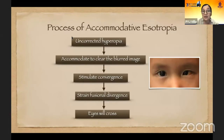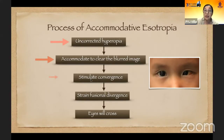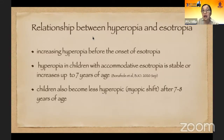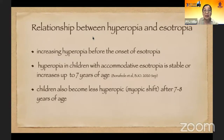In the process of accommodative isotropia, when the hyperopia is uncorrected, the eyes tend to accommodate excessively just to make the image clearer. This will stimulate overconvergence, straining the fusional divergence, which eventually leads to crossing of the eye. The relationship between hyperopia and isotropia is as follows: there is increasing hyperopia before the onset of isotropia. The grade in hyperopic children with accommodative isotropia is stable, sometimes increasing up to seven years of age, and then after seven or eight years old, the grade slowly goes down — what we know as the myopic shift.